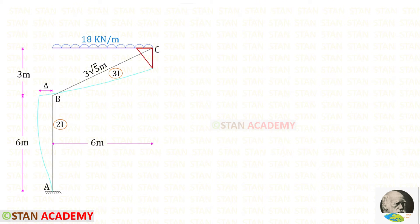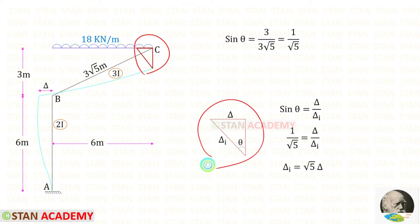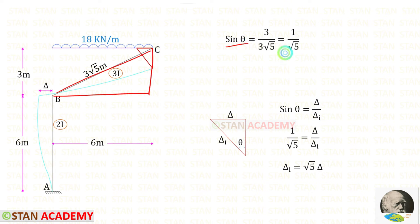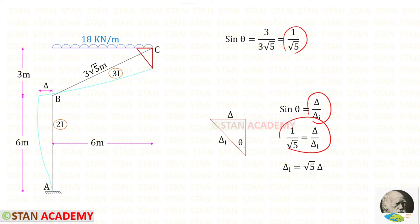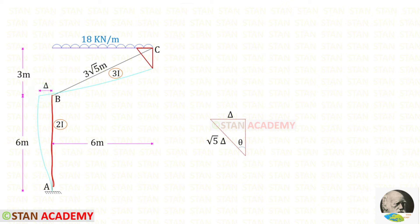From the previous analysis, if the horizontal displacement is delta, the inclined displacement delta_i can be found using sin theta = delta upon delta_i. Since sin theta equals 1 upon root 5, equating these gives delta_i = root 5 times delta. So for member AB the displacement is delta, and for member BC the displacement is root 5 delta.